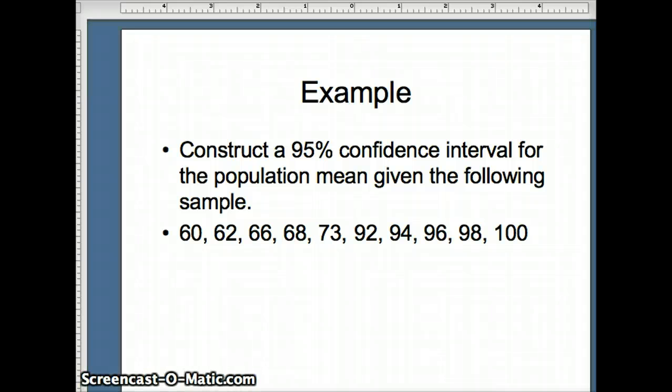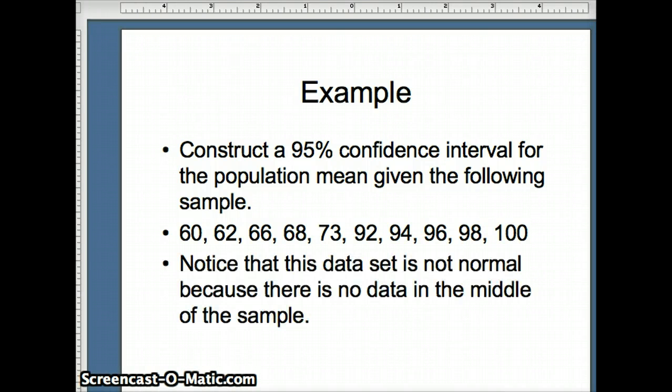So here's our example. Our goal is to construct a 95% confidence interval for this dataset: 60, 62, 66, 68, 73, 92, 94, 96, 98, 100. Oftentimes in mathematics classes, this looks like the final exams. You have some students who didn't study, you had some students that did. Generally speaking, this will not be a normal distribution because there is no data in the middle.